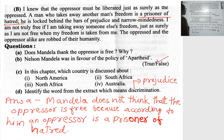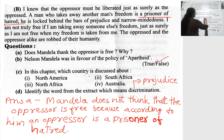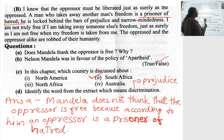Question Number C: In this chapter, which country is discussed about? You have studied this lesson, so you know which country it is — South Africa. Nelson Mandela said the country is South Africa. So the answer is South Africa.